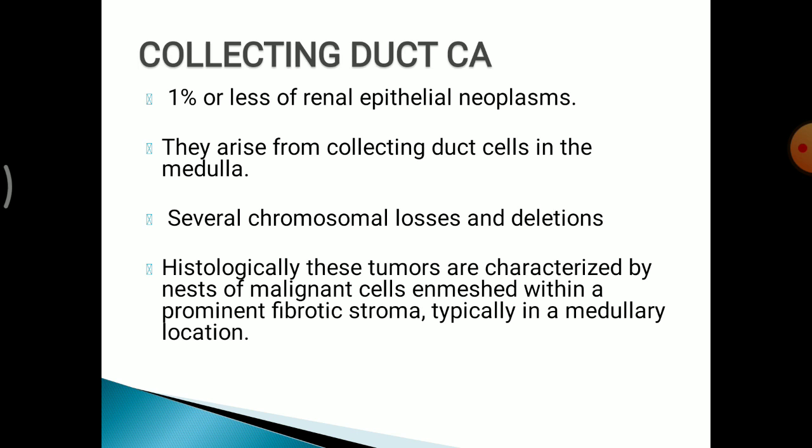Collecting duct carcinoma comprises 1% or less of renal epithelial neoplasms. They arise from the collecting ducts in the medulla, show several chromosomal losses and deletions. Histologically, these tumours are characterized by nets of malignant cells enmeshed within a prominent fibrotic stroma, typically in the medullary location.